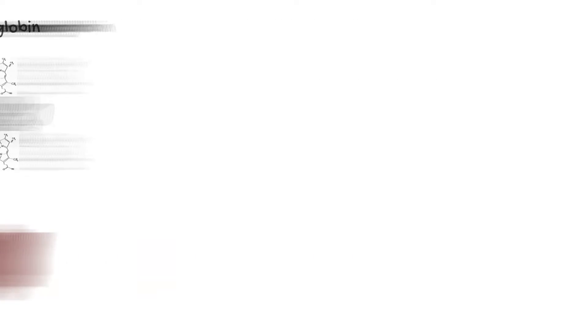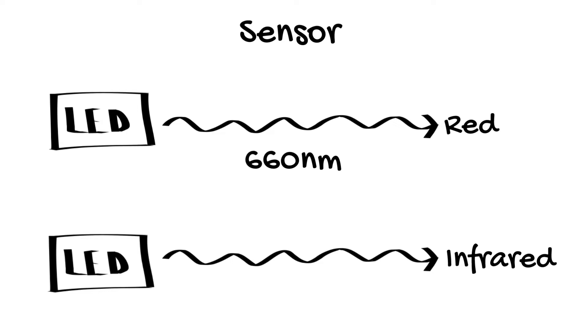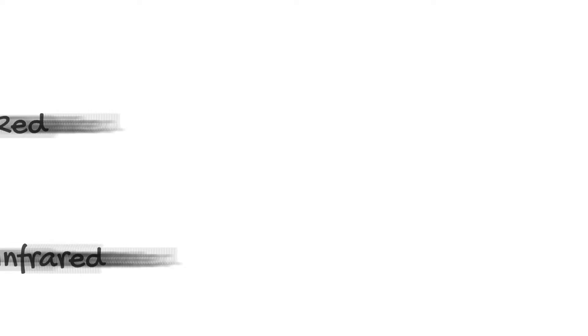The next component is the sensor system. This consists of a pair of light emitting diodes which emit monochromatic red light at a wavelength of 660 nanometers and monochromatic infrared light which we cannot see because it's outside the visible spectrum at a wavelength of 940 nanometers. The reason these wavelengths were selected is because at these wavelengths, oxygenated hemoglobin and deoxygenated hemoglobin have very different absorptive properties.